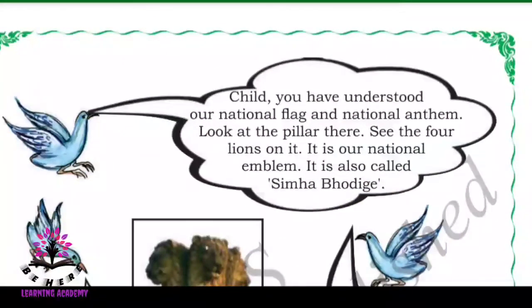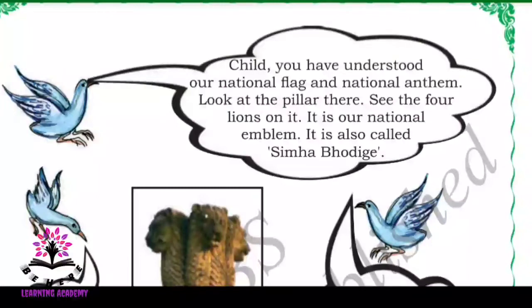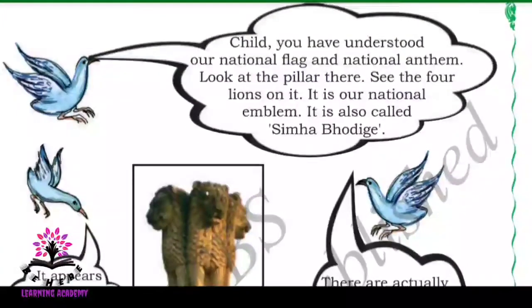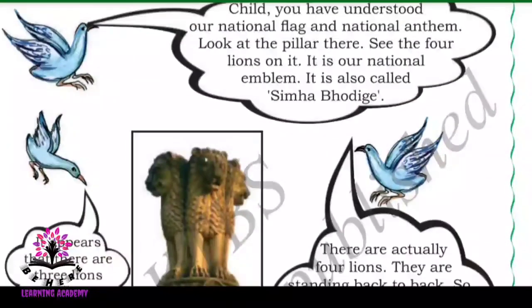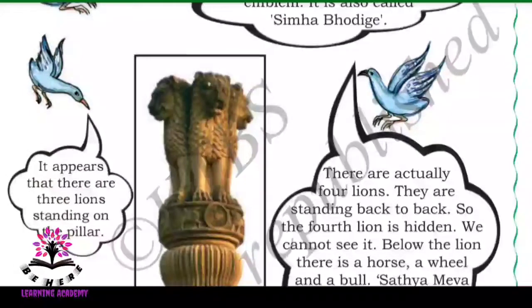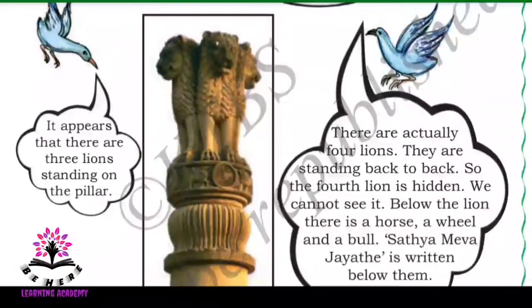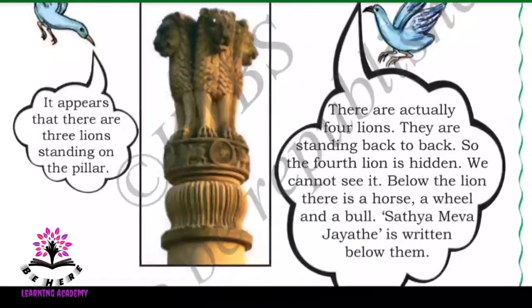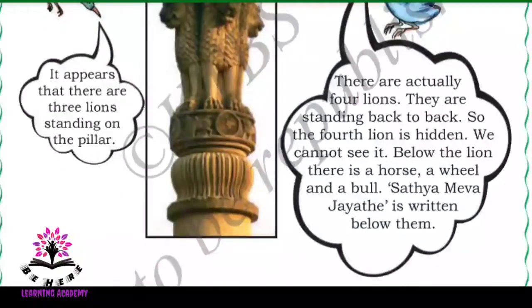Child, you have understood our national flag and national anthem. Now look at the pillar here — see the four lions on it. It is our national emblem, also called Simha Bodhike. It appears that there are three lions standing on the pillar, but there are actually four lions. They are standing back to back, so the fourth lion is hidden.